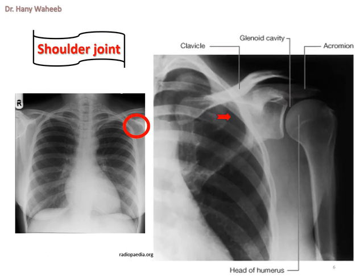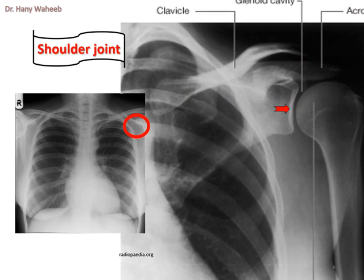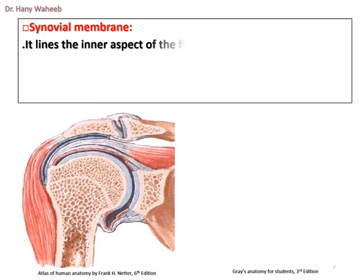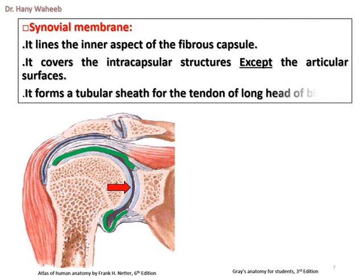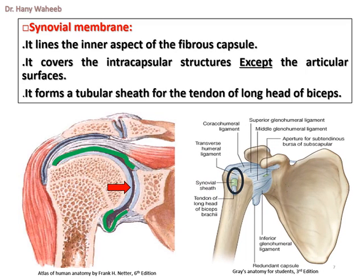Shoulder joint as seen on x-ray. Synovial membrane: it lines the inner aspect of the fibrous capsule, covers the intracapsular structures except the articular surfaces, and forms a tubular sheath for the tendon of the long head of biceps.